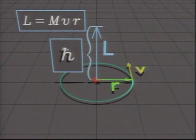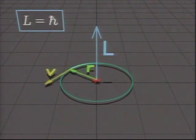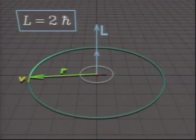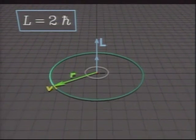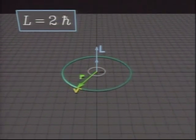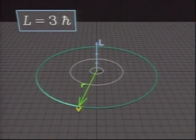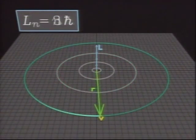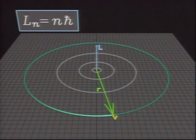So in Niels Bohr's model of the hydrogen atom, the lowest orbit has angular momentum h-bar. The next orbit has 2 h-bar. The next has 3 h-bar. And in fact, an allowed orbit exists for any integer times h-bar.